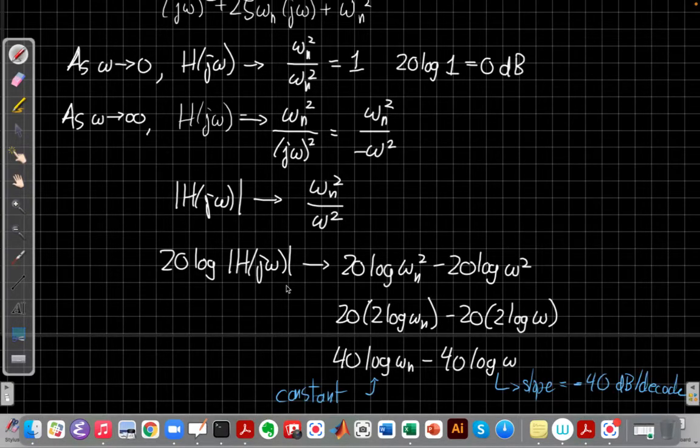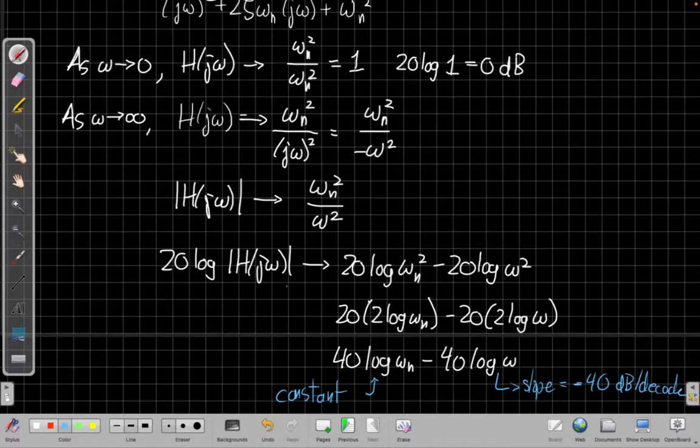So thinking about what we have here, what kind of filter does this seem like? This kind of filter is also a low pass filter. It's just as a second order filter, the high frequencies decay faster, so it attenuates faster than our first order filter. So let's move to a clean page and make a picture of this.